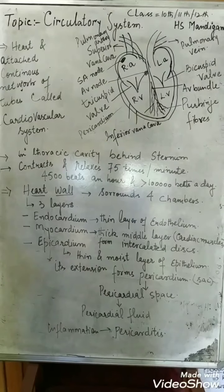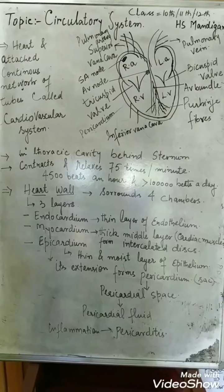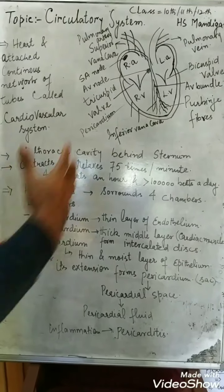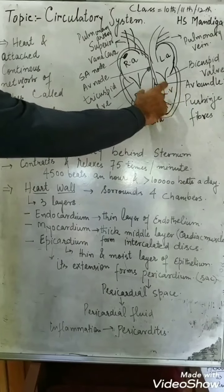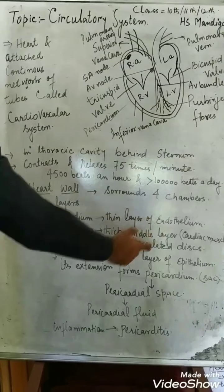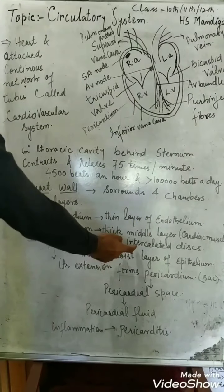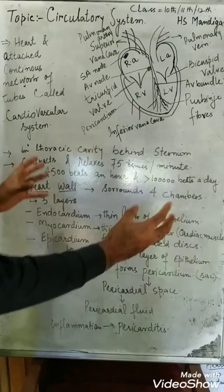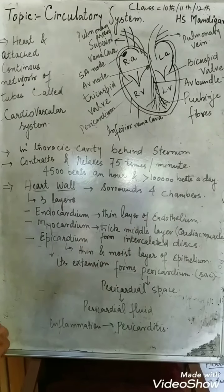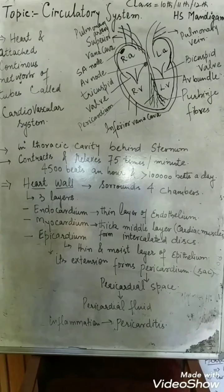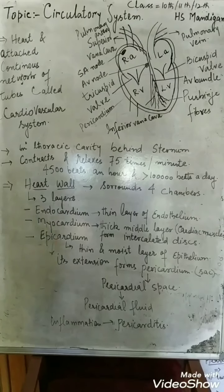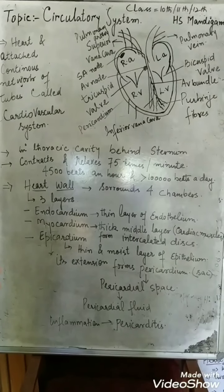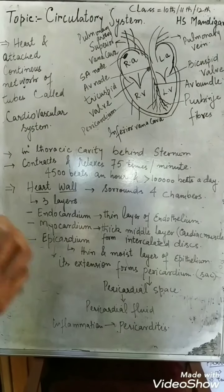The cardiac muscles are branched and have a large number of branches. Those branches form junctions with each other called intercalated discs. These intercalated discs help to transmit the electrical impulse throughout the heart, allowing the heart to contract as a single unit.